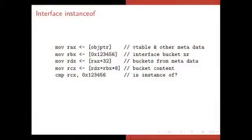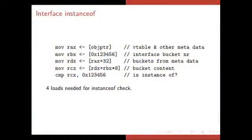So this is a machine code for instance of check of an interface. So we load the virtual table and other metadata. We load the bucket number for this interface, which we know because we know which interface we're checking for. We load the buckets from the class that we're looking at. And we load the bucket content. And we look into that bucket. Is my interface in that bucket? Yes, then I'm compatible. Otherwise, it's some other interface or no interface at all in that bucket. And then I can't be compatible with that interface. So we need four loads for an instance of check.